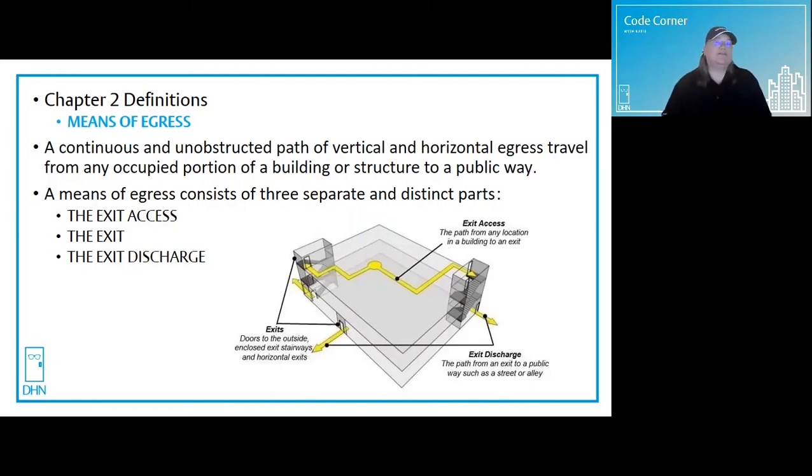The definition of a means of egress can be found in Chapter 2. It is a continuous and unobstructed path of vertical and horizontal egress travel from any occupied portion of a building or structure to a public way. And a means of egress consists of three separate distinct parts.